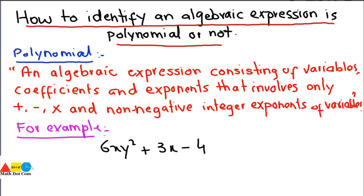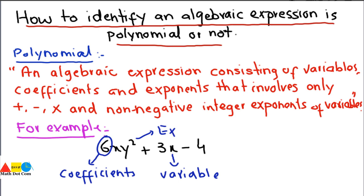This is a polynomial. If we label it, we can say that it consists of a coefficient, a variable, and an exponent, and the exponent is a positive integer. This is an algebraic expression that is a polynomial. It consists of multiple terms.